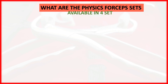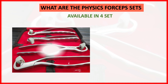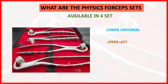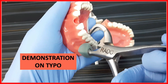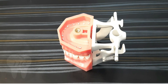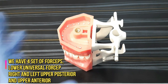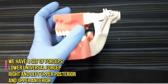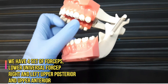What are the physics forceps sets? They are available in four sets, as already discussed in my previous videos. We have the lower universal, then upper left, upper right posteriors. With the help of diagrams, I'll show you how to use physics forceps. We have four sets: lower universal forceps, right and left upper posteriors, and the upper anterior.